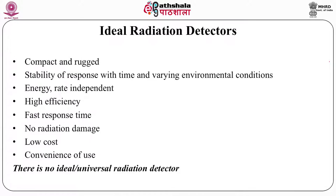What should be an ideal radiation detector? Everybody would like a detector that can be used in any situation. So that detector should be compact and rugged. Its response should be stable with time and even in changing environmental conditions — for example, high humidity or high temperature should not change its response to radiation.